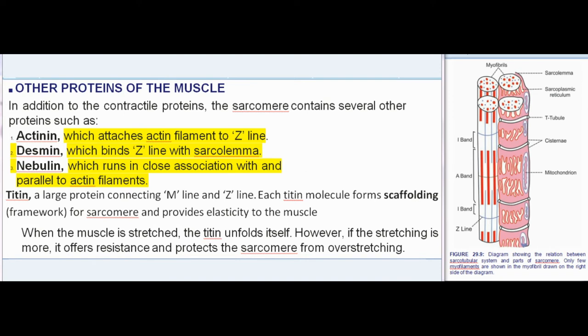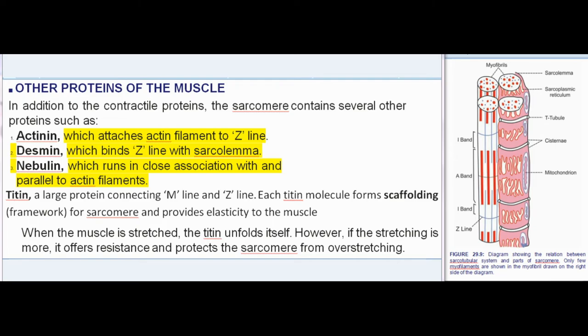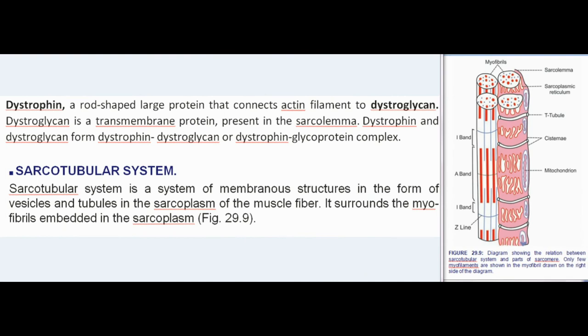Other Proteins of the Muscle: In addition to the contractile proteins, the sarcomere contains several other proteins such as: Actinin, which attaches actin filament to Z-line; Desmin, which binds Z-line with sarcolemma; Nebulin, which runs in close association with and parallel to actin filaments; Titin, a large protein connecting M-line and Z-line. Each titin molecule forms scaffolding or framework for sarcomere and provides elasticity to the muscle. When the muscle is stretched, the titin unfolds itself. However, if the stretching is more, it offers resistance and protects the sarcomere from overstretching. Dystrophin, a rod-shaped large protein that connects actin filament to dystroglycan. Dystroglycan is a transmembrane protein present in the sarcolemma. Dystrophin and dystroglycan form dystrophin-dystroglycan or dystrophin-glycoprotein complex.